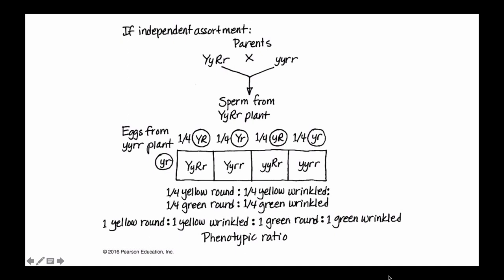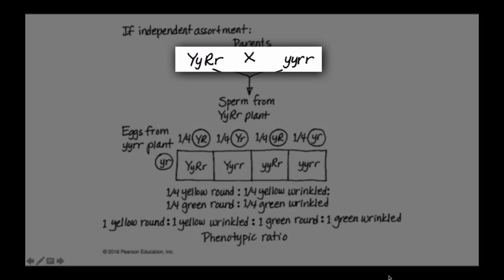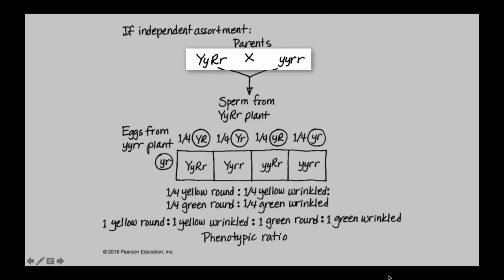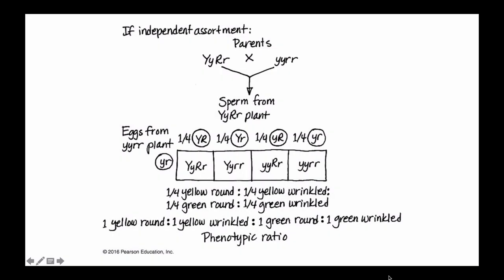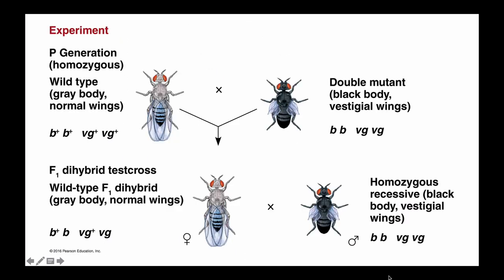And so this is again called the test cross. It's when you cross a heterozygous parent with a homozygous recessive. And geneticists use this strategy a lot of times to determine how the genes are conveyed and passed on to the offspring follow certain rules. And if you don't see the normal pattern, then you can come up with a particular hypothesis about how the particular traits are being passed on.